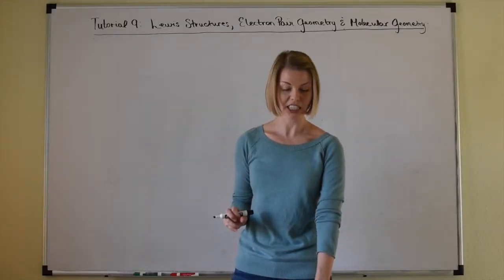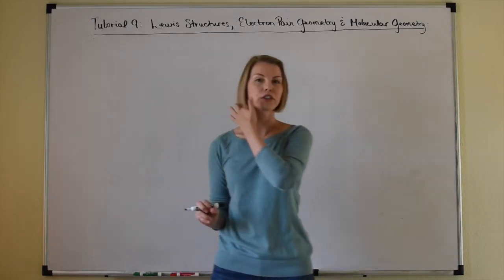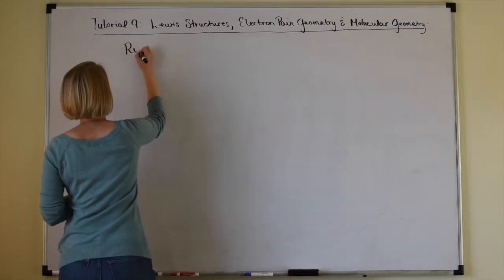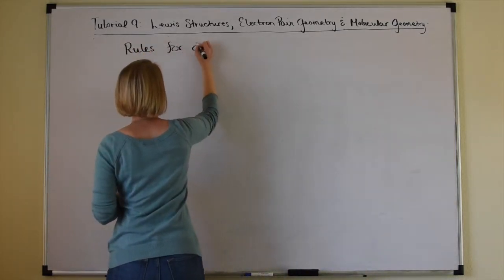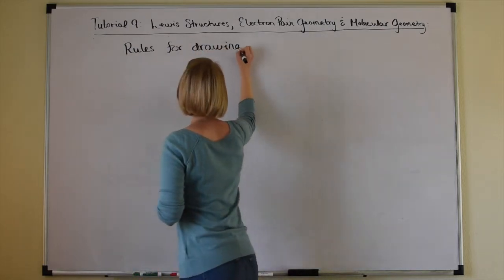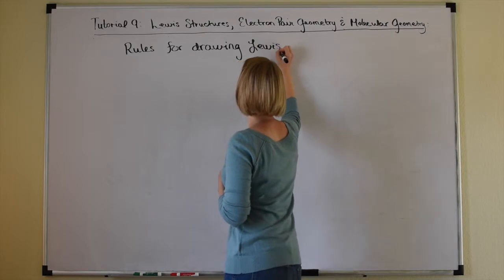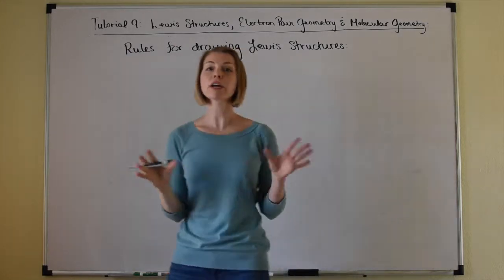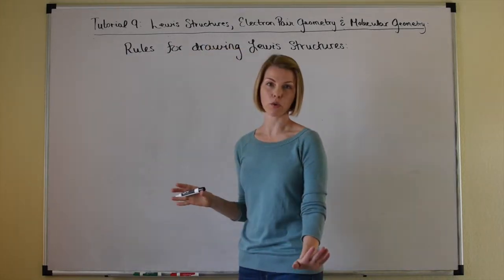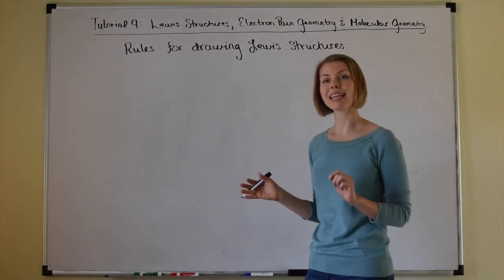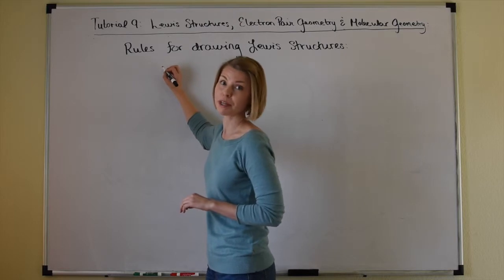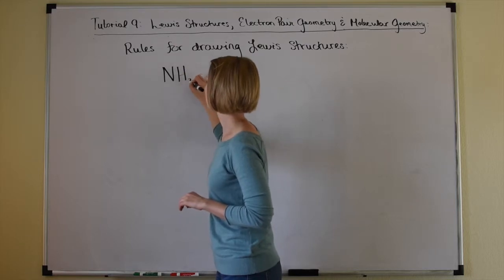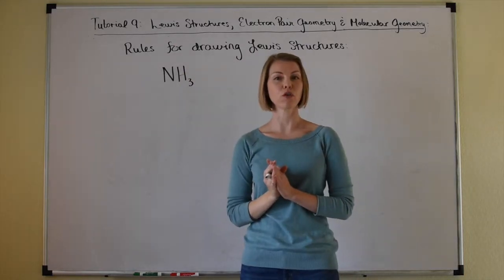Let's go on to slide two, which has five rules laid out for drawing Lewis structures. I'm not going to write those rules down because they're already on slide two — I'm just going to read through them. As we read through the rules, we'll apply them to a problem and draw a Lewis structure for ammonia.